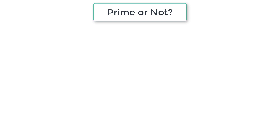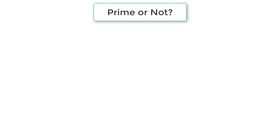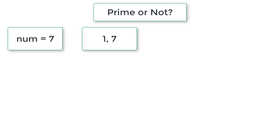Let's write a C program to check if the user entered number is a prime number or not. A prime number is a natural number greater than 1 which has no positive divisors other than 1 and itself. For example, if the number is 7, it's perfectly divisible only by 1 and 7. No other numbers divide 7 to give a remainder of 0, so 7 is a prime number.